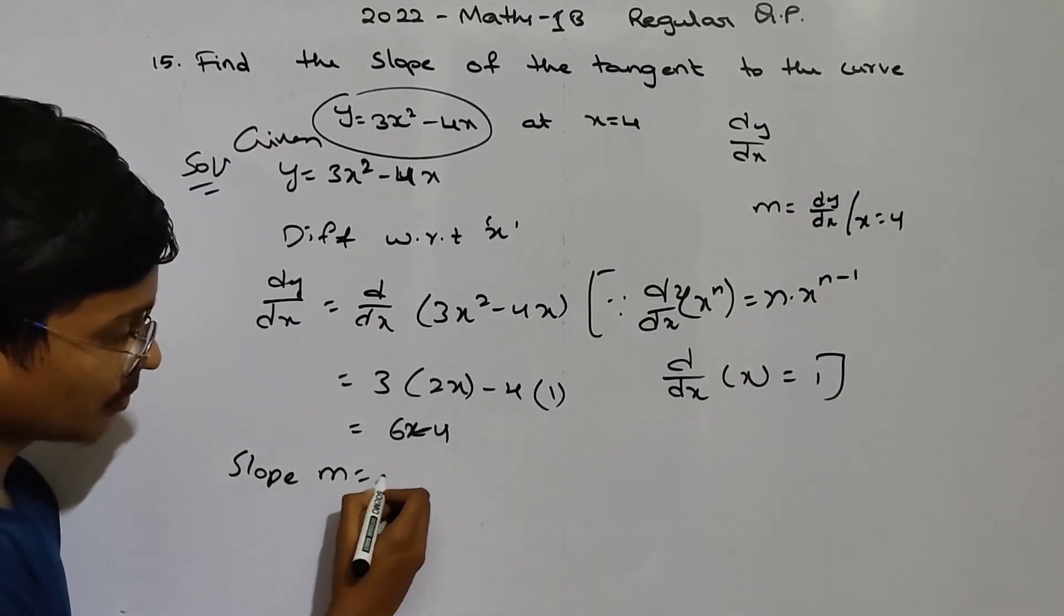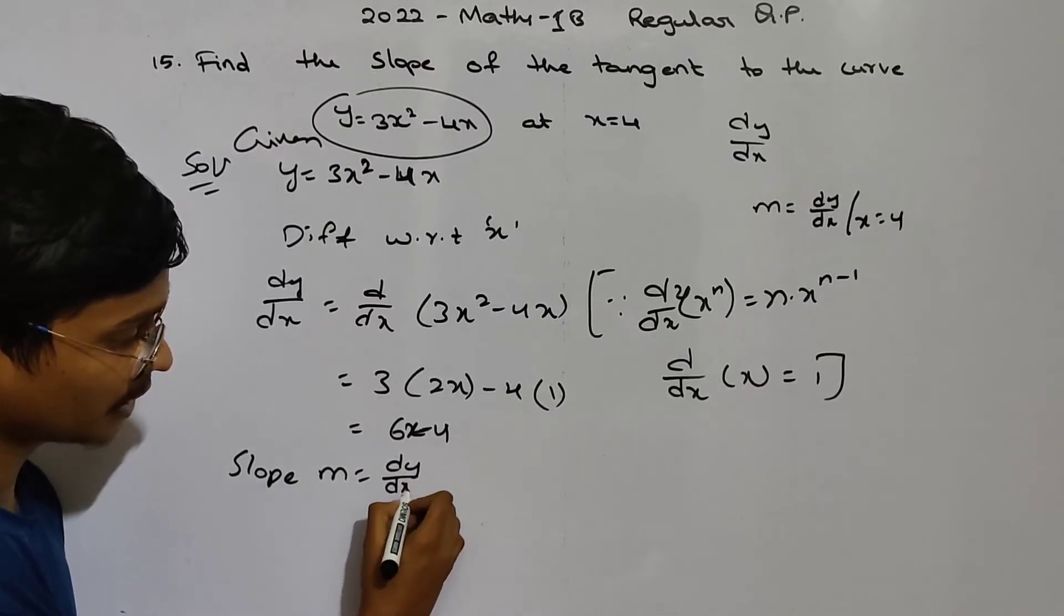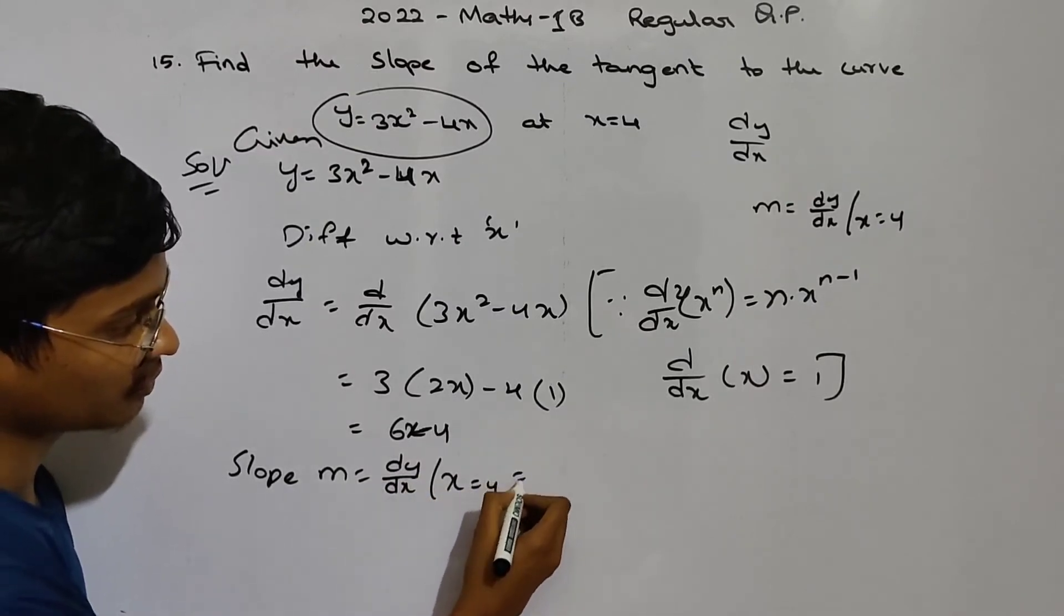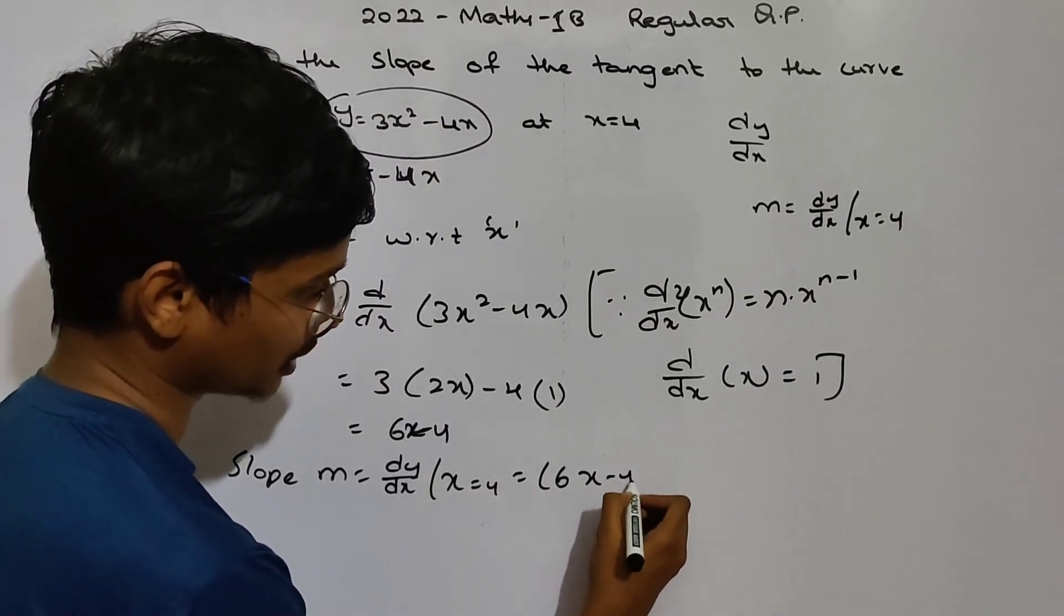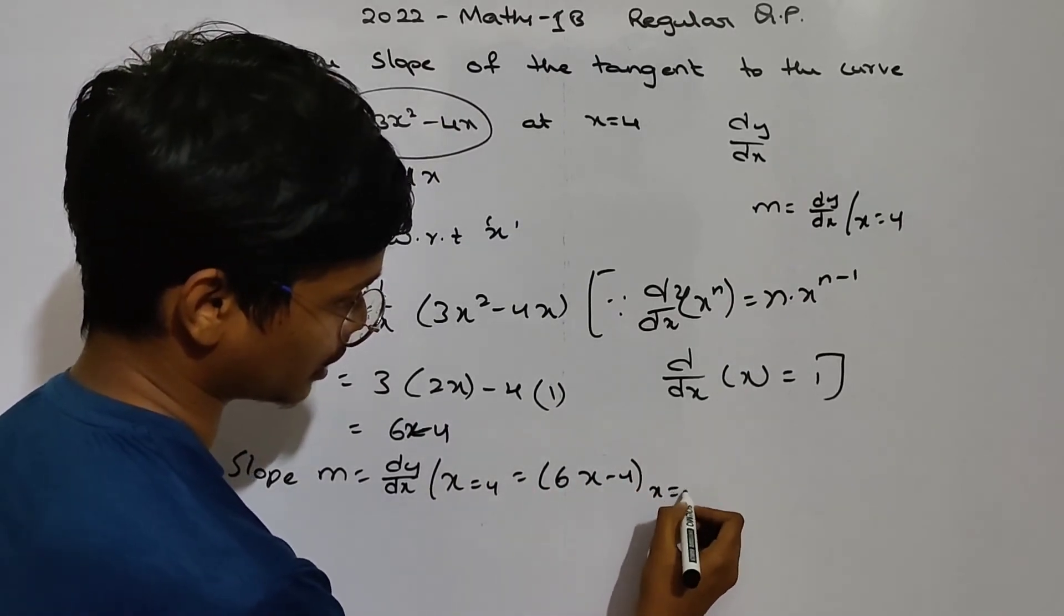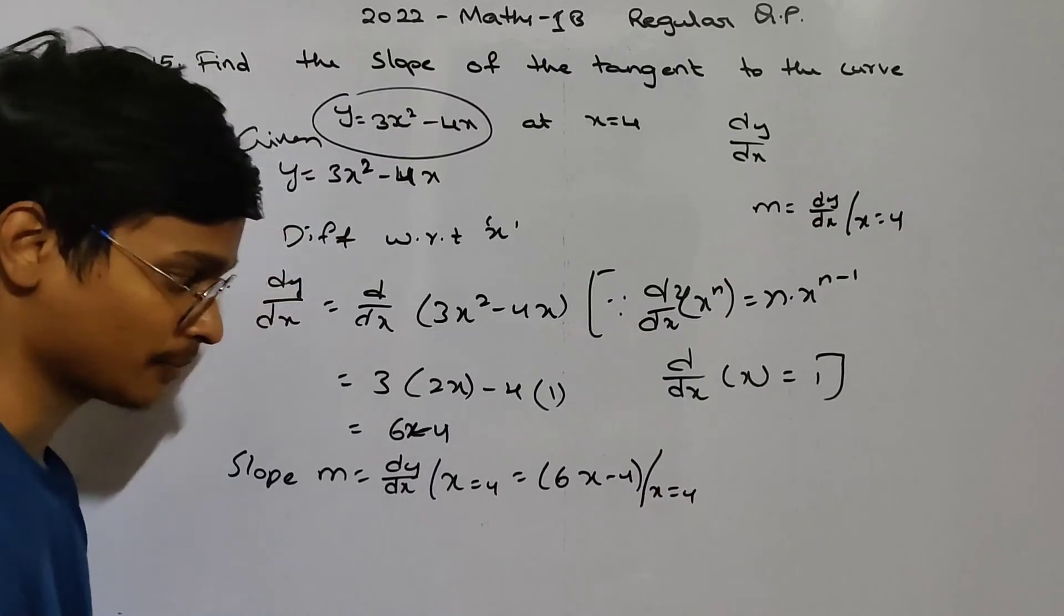Slope m is equals to dy by dx at x equals to 4. dy by dx nth of 6x minus 4. And the rate x equals to 4.